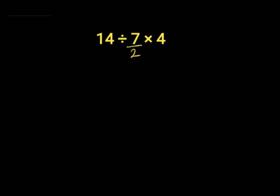14 divided by 7 over 2 times 4. 2 into 1, 2 into 4, gives us 2.